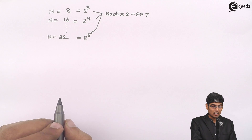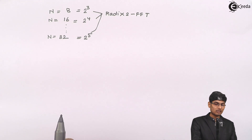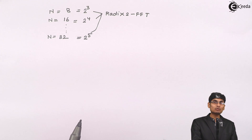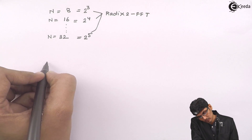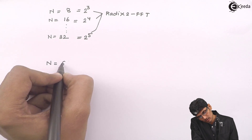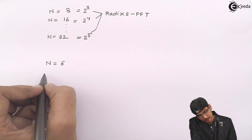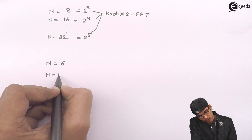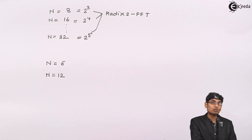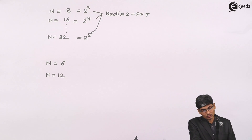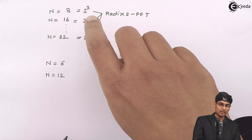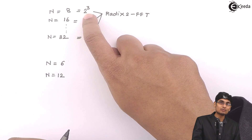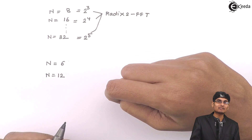But suppose from a sensor I am going to get some samples that have a value of n equal to 6, or probably n equal to 12. Now, even though they are divisible by 2, they are not a power of 2. In this case, I cannot solve the FFT using radix-2, because in radix-2 the base should be 2, and such numbers do not have base 2.